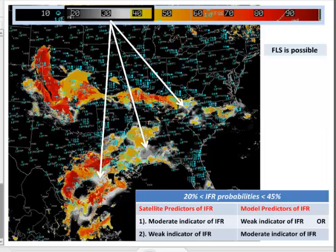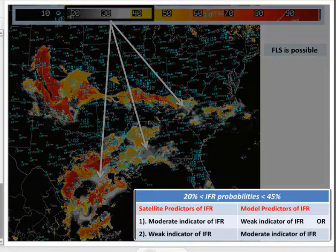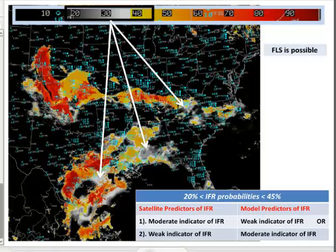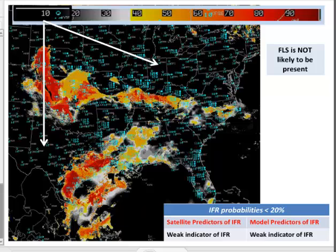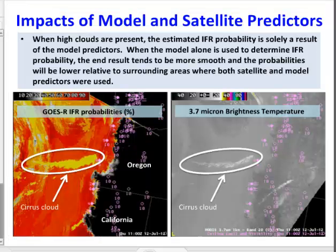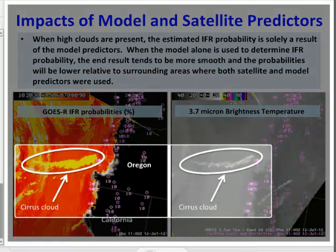IFR probabilities between 20% and 45% usually represent a low confidence that IFR conditions are present. Probabilities in this range can result from a weak satellite signal due to multilayered clouds, sub-pixel clouds, or poorly modeled relative humidity profiles. Further monitor these areas with additional information if possible to further rule out or gain confidence on the presence of fog and low stratus. When IFR probabilities are less than 20%, this is very low confidence that IFR conditions are present, and surface observations usually verify that IFR conditions are not present.